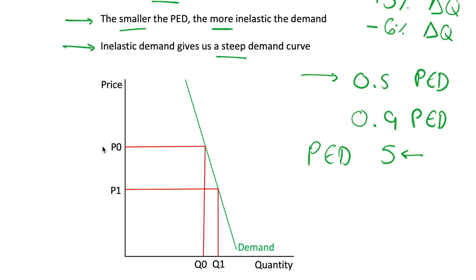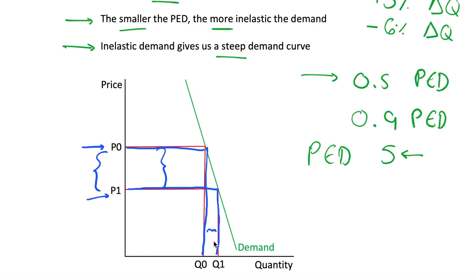Why is this? Let's imagine we start at price P0 on our demand curve, which gives us quantity Q0. If we give ourselves a large decrease in price down to P1, using our inelastic demand curve this gives us quantity Q1. We can see that this large change in price from P0 to P1 has only caused a small change in quantity from Q0 to Q1 — a 10% change in price gives only a 5% or 6% change in quantity demanded, because it's an inelastic demand curve with a steep slope.